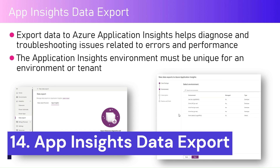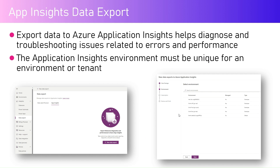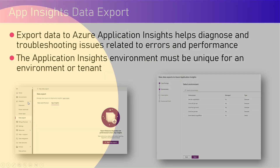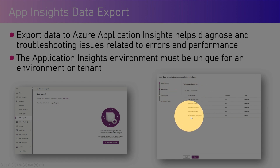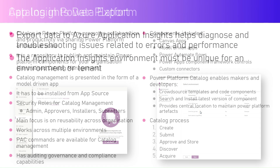App Insights and data export allow you to track all application and system-related errors within Power Platform by exporting data to Azure Application Insights, a separate service within Microsoft Azure based on Azure Monitor. Application Insights renders charts, graphs, and data about errors, warnings, usage, and access within your organization. The Application Insights environment must be unique for a specific tenant. You can configure this under Analytics > Data Export, and within approximately 24 hours you'll see all visuals and reports in Application Insights.